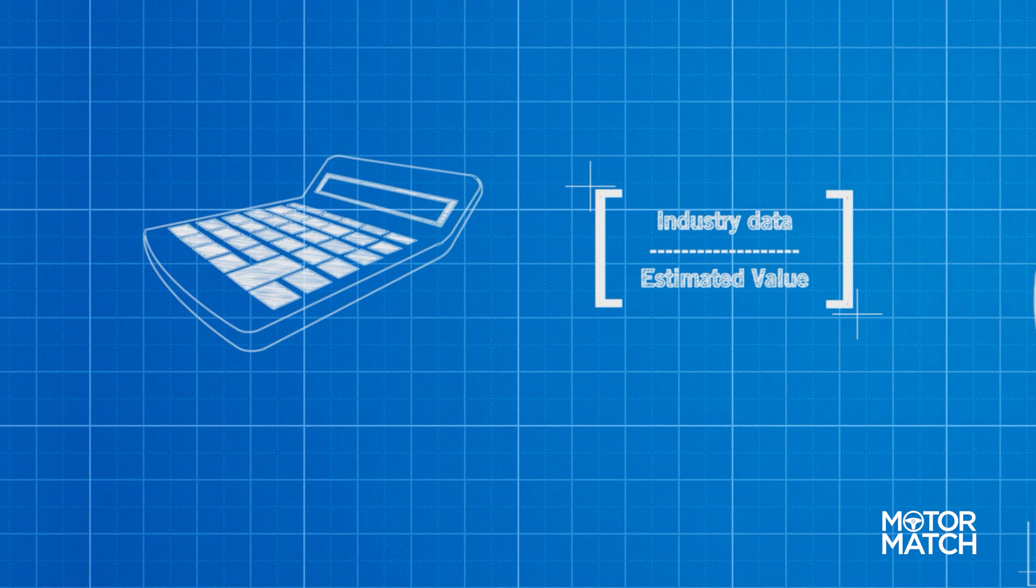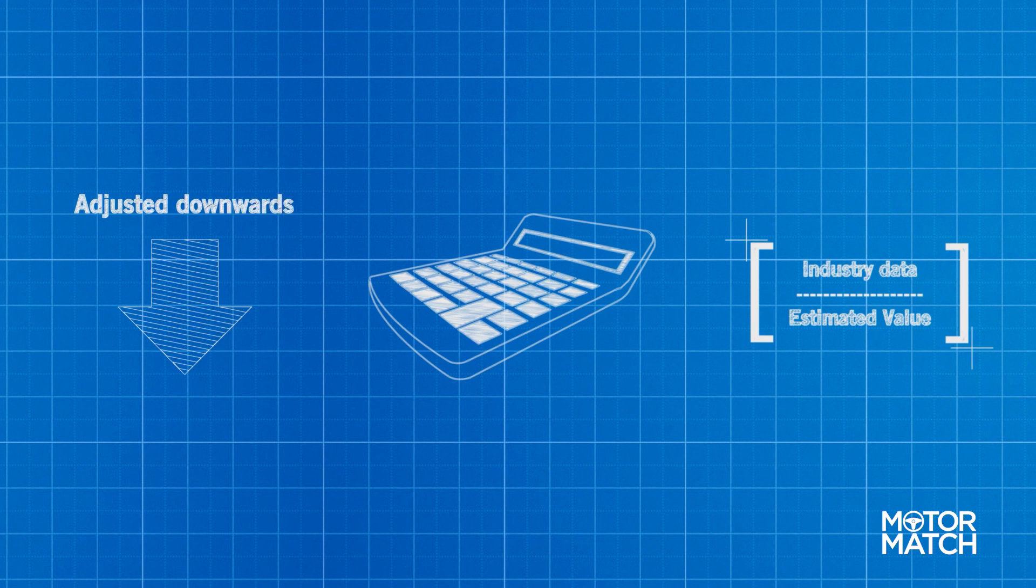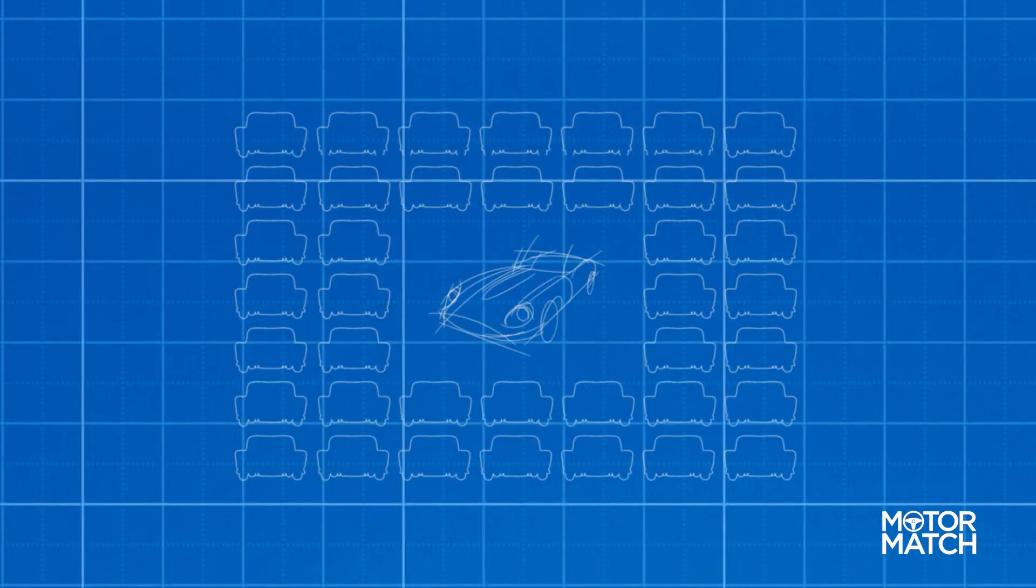The final payment amount is often adjusted downwards to ensure that you are left with equity at the end of the agreement for your next purchase. In a feature unique to PCP agreements,